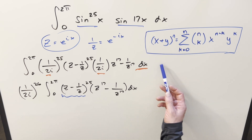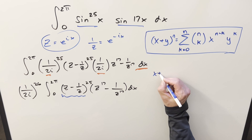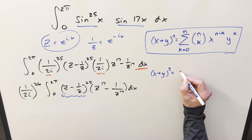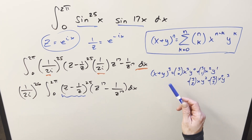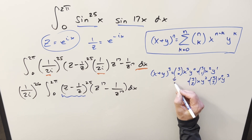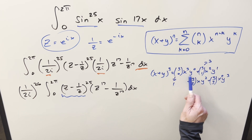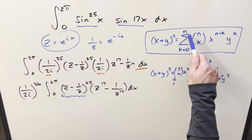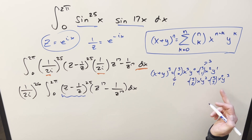For the binomial theorem, we've got the formula up here to the right. This is the same as when you expand (x + y)^3: you get terms with every coefficient from k = 0 to n (which is 3 here), giving the 3rd, 2nd, 1st, and 0th powers. The same thing will happen with z: we'll have a term z^25, then z^24, all the way down to z^0, which is just 1.